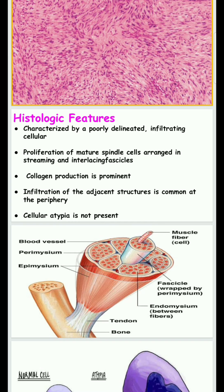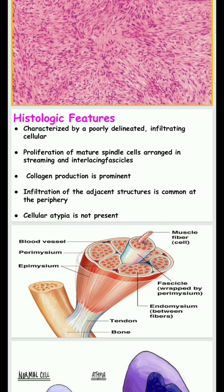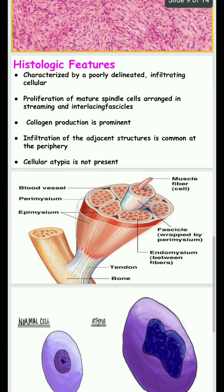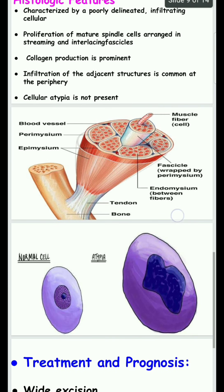Collagen production is more prominent, and infiltration of the adjacent structure is common at the site of the perineurium. In the perineurial area it gets infiltrated and invades the adjacent tissue structure, leading to extension of the fibromatosis. Cellular atypia is not present. Atypia means abnormal cells — in this case atypia is absent.